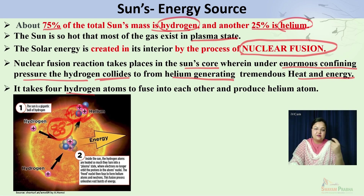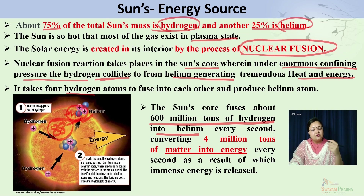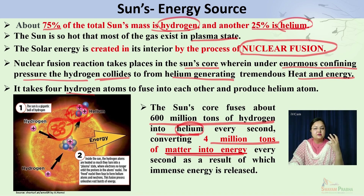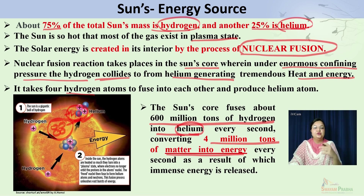The sun's core fuses about 600 million tons of hydrogen into helium every second, converting 4 million tons of matter into energy each second. This continuous nuclear fusion reaction — which has been going on for millions of years — is the main cause of the sun's energy and the primary source of energy for our planet. Inside the sun's core, hydrogen atoms continuously bombard together to produce helium atoms, and as a by-product an immense amount of energy is released.